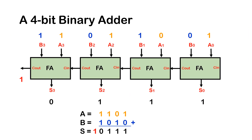We can make a 4-bit binary adder by cascading 4 full adders. This particular full adder block diagram, called FA, is the same as from the previous slide — just rearranged inputs and outputs. The inputs are A0, A1, A2, A3, and B0, B1, B2, B3.